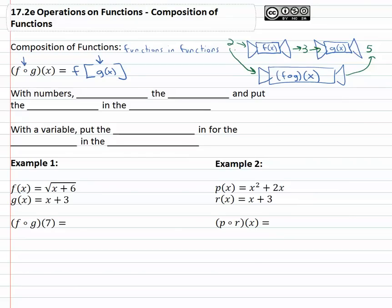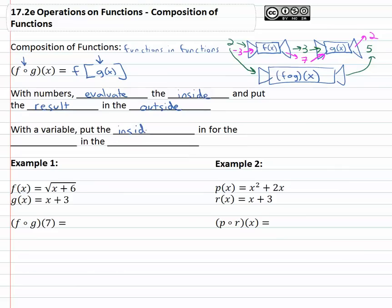What we're doing is plugging a number in — maybe negative three into a function — getting seven out, and then it's immediately plugged into the next function, giving us maybe a two out. The solution is immediately plugged into the next function. With numbers, this means we evaluate the inside function first — order of operations — and put the result into the outside function. With variables, it's much the same idea: we put the inside function in for the variable in the outside function.